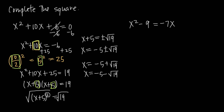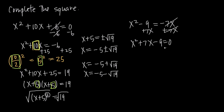Now let's look at a second example: x squared minus 9 equals negative 7x. First, we add 7x to both sides to get x squared plus 7x minus 9 equals 0. Then we add 9 to both sides to move the constant to the right, giving us x squared plus 7x equals 9.